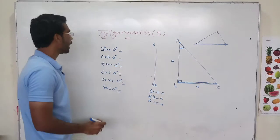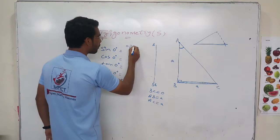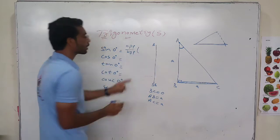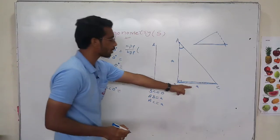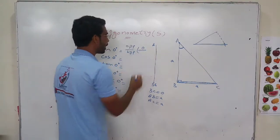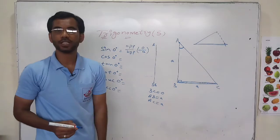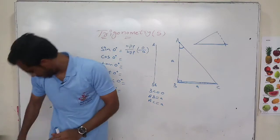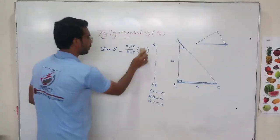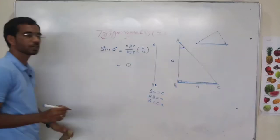Now, sin theta — what is sin theta? It is opposite by hypotenuse. The opposite is 0 and the hypotenuse is A. So sin 0 degrees equals 0 by A, which equals 0.